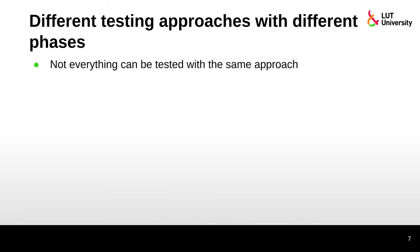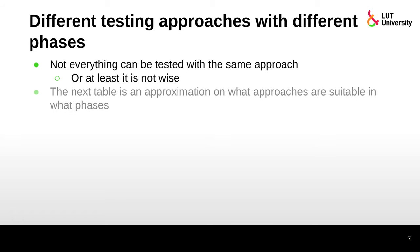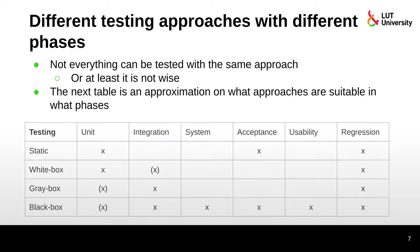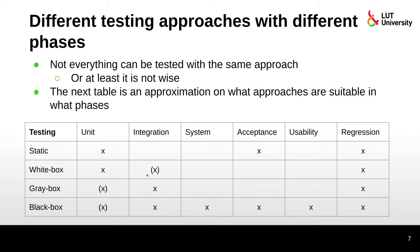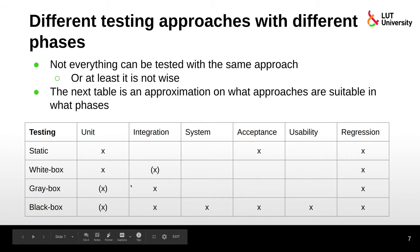Not everything can be tested with the same approach, and even if it could be, it's definitely not wise. The next table is an approximation of what approaches are suitable in which phases. We have static, white box, gray box, and black box testing across the columns, and unit, integration, system, acceptance, usability, and regression testing as rows. White box is used at the low level in unit testing and also somewhat in integration testing, and then as we go higher we use more and more black box testing.